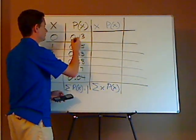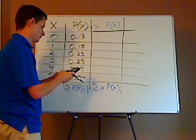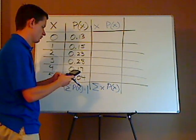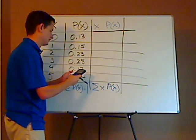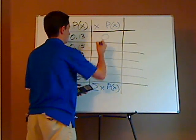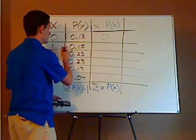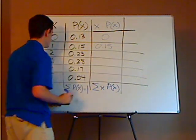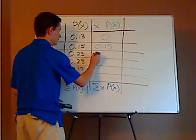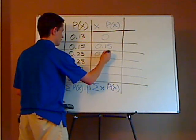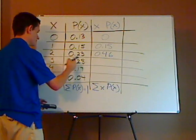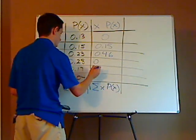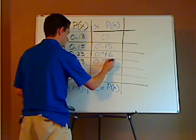So you're just multiplying these two. So first, you do 0 times 0.3, which is 0, obviously. This is going to be 1 times this, which is 0.15, then 2 times this, which would be 0.46. This right here would be 0.84.